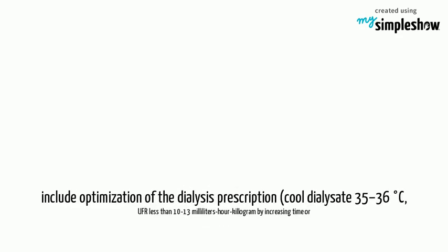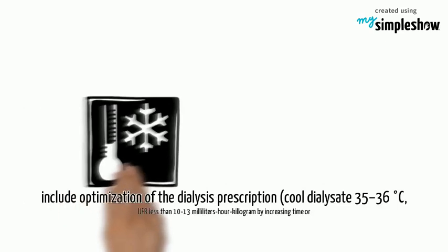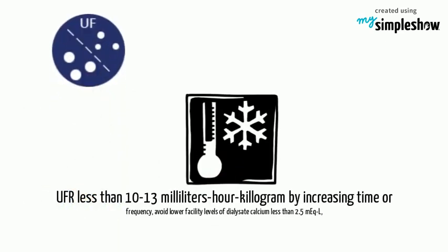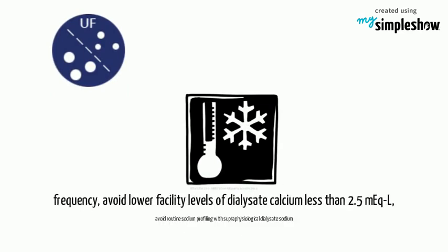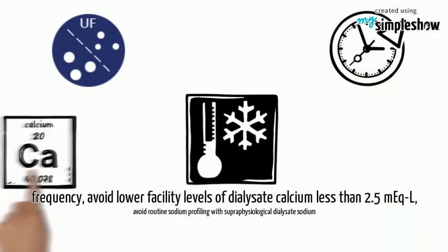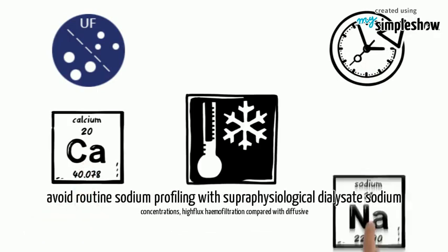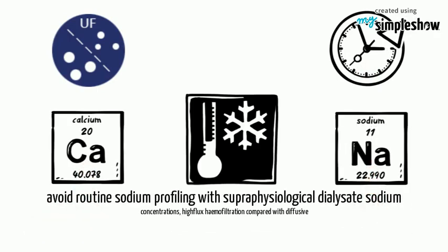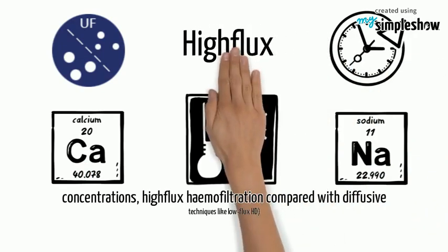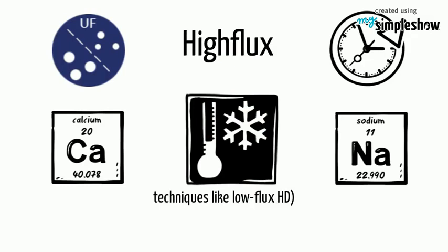Prevention and treatment to decrease the incidence or severity of IDH include optimization of the dialysis prescription: cool dialysate at 35 to 36 degrees Celsius, UFR less than 10 to 13 mL/hour/kg by increasing time or frequency, avoiding lower facility levels of dialysate calcium less than 2.5 mEq/L, avoiding routine sodium profiling with super-physiological dialysate sodium concentrations, and high-flux hemofiltration compared with diffusive techniques like low-flux HD.